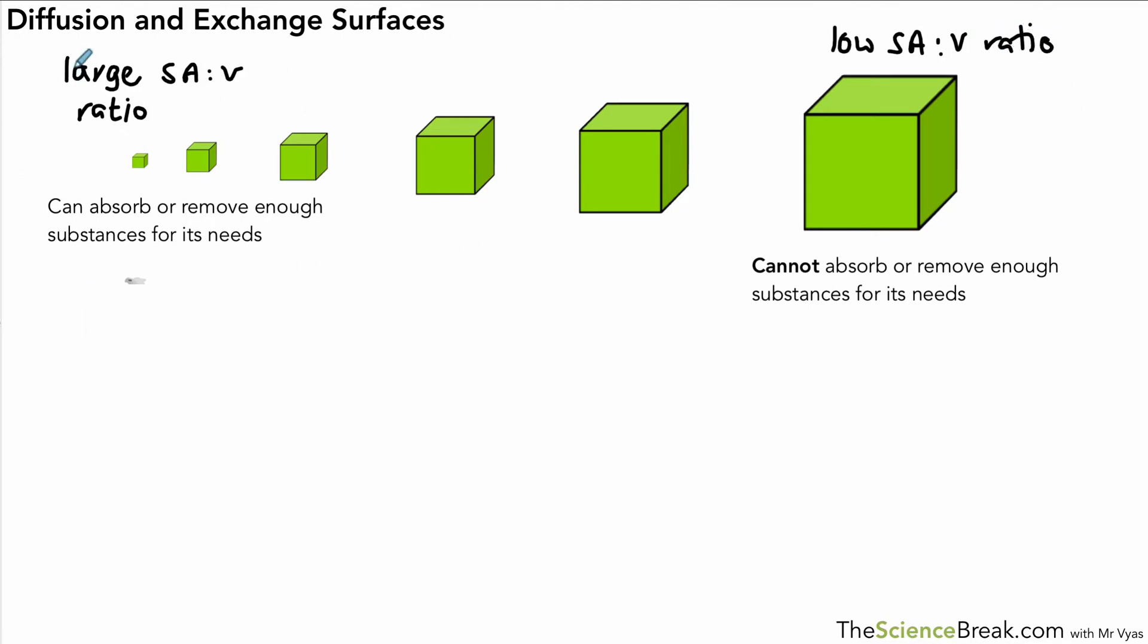A low surface area to volume ratio. That means if a living thing is very small it can absorb or remove enough substances for its need from the surroundings. If you have a low surface area to volume ratio you cannot absorb substances you need from the surface because there's just way too much bulk to supply.